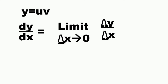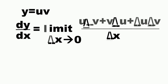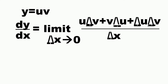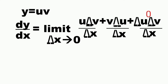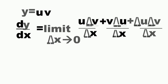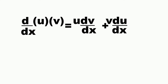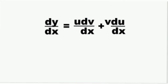dy over dx is equal to the limit of delta y over delta x as delta x approaches zero. Substituting the derived value of delta y — which is u delta v plus v delta u plus delta u times delta v — all over delta x. The last term, delta u times delta v over delta x, becomes zero due to becoming so small, leaving only u delta v over delta x plus v delta u over delta x. Since delta x approaches zero, dy over dx equals u dv over dx plus v du over dx.